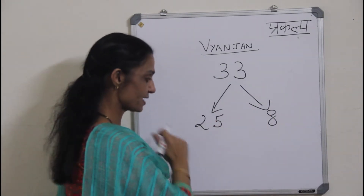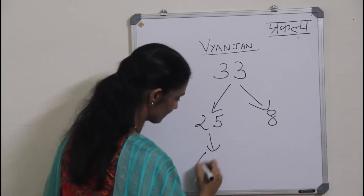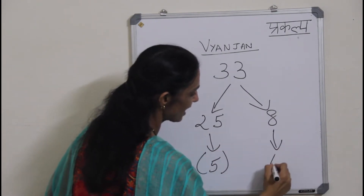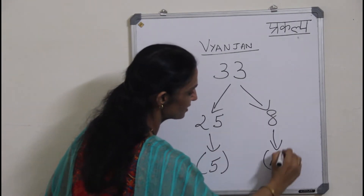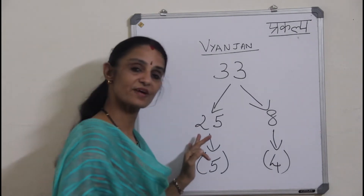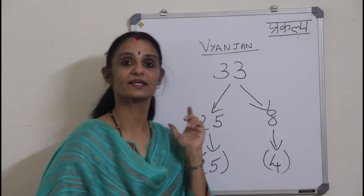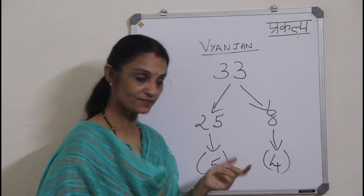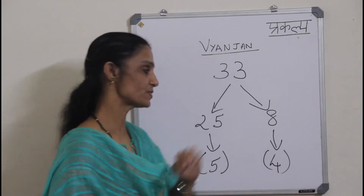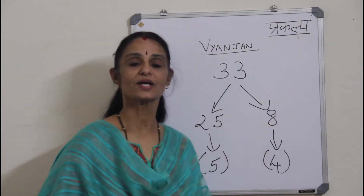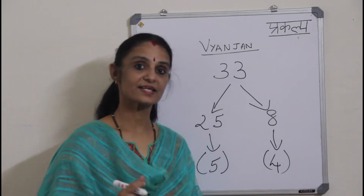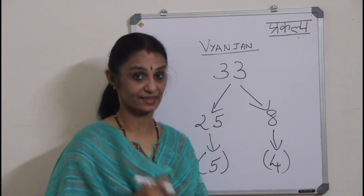These 25 Vyanjan are again divided into groups of 5, and the remaining 8 are divided into groups of 4. That means these 25 Vyanjan are written in clusters of 5 and these 8 are written in clusters of 4 — meaning we have totally 7 clusters in the Hindi Vyanjan. Let us start writing the Vyanjan.